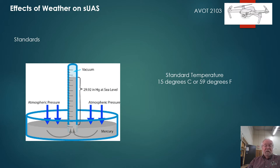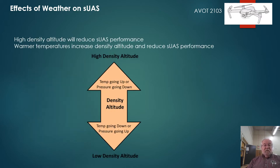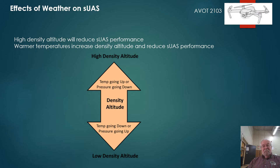Different weather reporting stations have different altimeter settings — it's just a conversion of one inch per thousand feet. The difference is caused by unequal heating of the Earth's surface, which creates different barometric pressures. There will be several questions about this. High density altitude reduces UAS performance. Warmer temperatures increase density altitude and reduce UAS performance. When temperature goes up or pressure goes down, it's as if we're flying at a higher altitude even though we're on the ground. The standards are 59°F or 15°C and 29.92 inches — that's called a standard day.